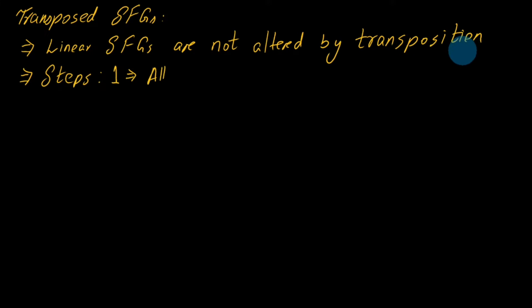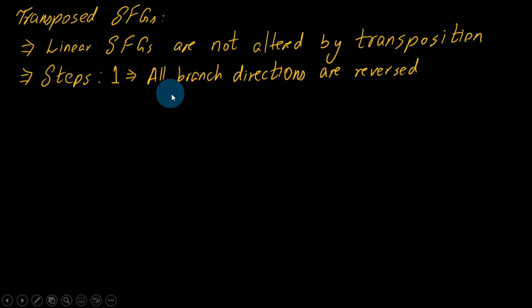It's a very simple process with two steps. First, all branch directions are reversed. Next, we interchange the sink and source nodes. To elaborate, let us take an example of a second-order system.